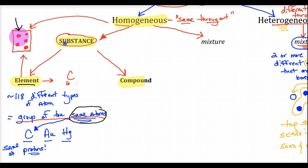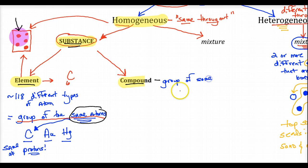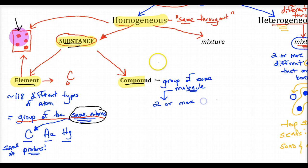A substance is always homogeneous — it's made of an element, a group of the same atoms, or a compound. A compound is made up of a group of the same molecules. A molecule, by definition in this course, is two or more different atoms bonded.